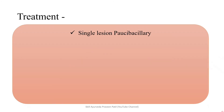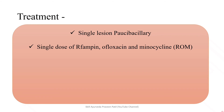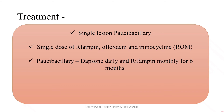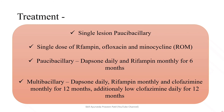Coming to treatment: for a single lesion that is paucibacillary, a single dose of rifampicin, ofloxacin, and minocycline can be given, or alternatively Dapsone daily and rifampicin monthly for 6 months. For multibacillary, the regimen is Dapsone, rifampicin, and clofazimine for 12 months. Nowadays the treatment regimen for paucibacillary and multibacillary remains the same — Dapsone, rifampicin, and clofazimine — except for the duration: 6 months for paucibacillary and 12 months for multibacillary. It is a 3-drug regimen for both.